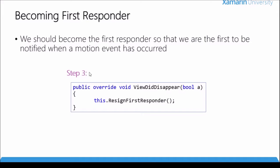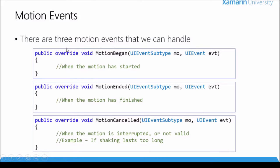After we become the first responder, the next thing we need to do is actually listen to the events. There are three methods we can override. The first is 'MotionBegan', which fires when the motion begins — so as you begin to shake your phone, this method will get fired. The second is 'MotionEnded', which fires when the system thinks the shake has ended. Finally, 'MotionCanceled' fires when the motion is interrupted or not valid — for example, if a shake lasts too long, it may fire 'MotionCanceled'.